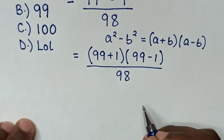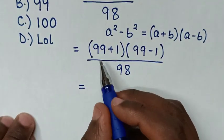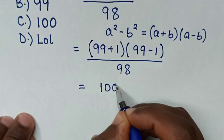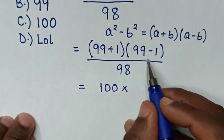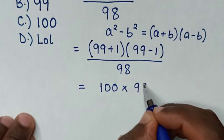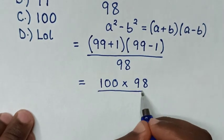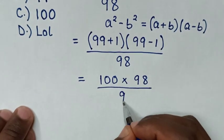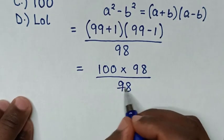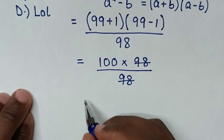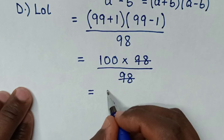Then it will be equal to 99 plus 1 is 100, then times 99 minus 1 is 98, then over this 98. To simplify, 98 will cancel with this 98, so it will be equal to this 100.